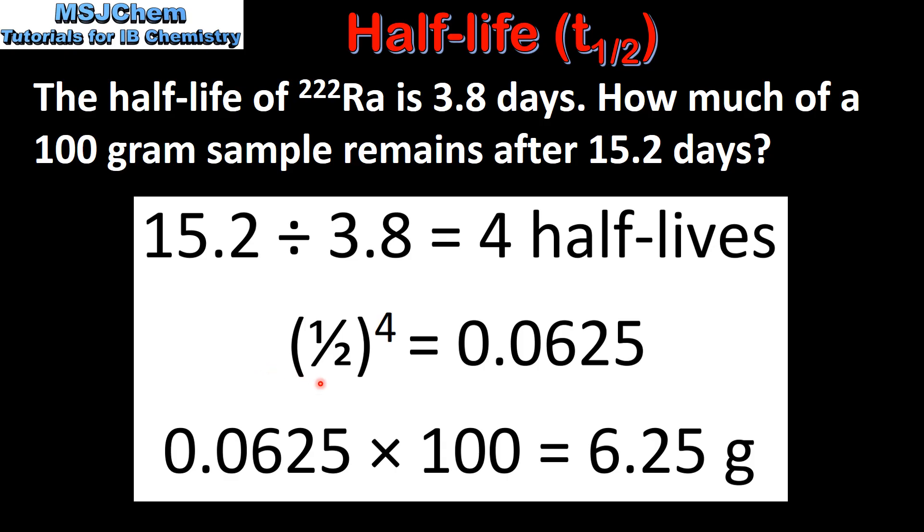The next step is to raise half to the power of the number of half-lives which have passed, which in this case is 4. This gives us 0.0625. We then multiply this number by the mass of the sample which is 100 grams which gives us 6.25 grams remaining.